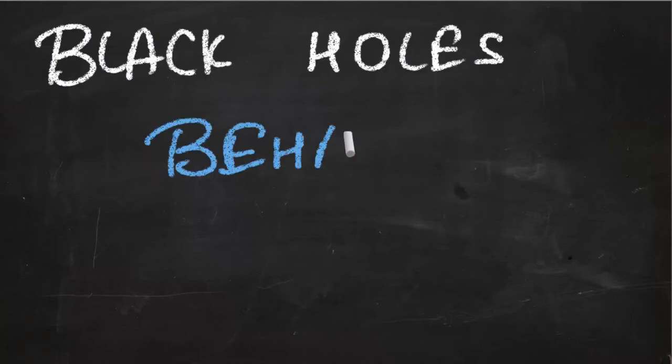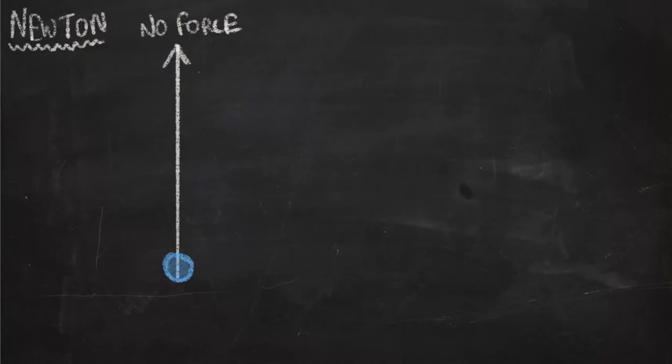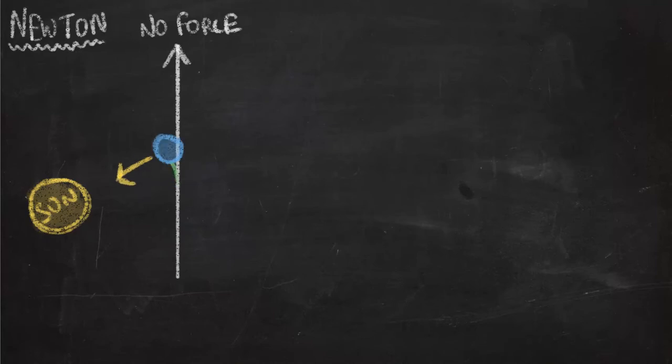Number 2. Black holes behave like things. The reason for this is gravity. Gravity, according to Newton, is an attractive force between things with mass. Like for example, Earth and the Sun attract each other due to gravity. According to Newton, without the Sun, there would be no force acting on the Earth and it would just keep traveling in a straight line. But with the Sun in place, it puts an attractive force on the Earth, gravity. And this force makes the Earth deviate from its original straight line path and that makes the Earth orbit the Sun.